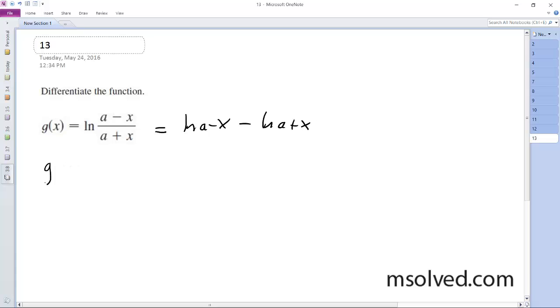And we get g prime of x is equal to quantity, so it's going to be 1 over (a minus x), derivative on the inside is negative 1, a is a constant, and then this is with respect to x.